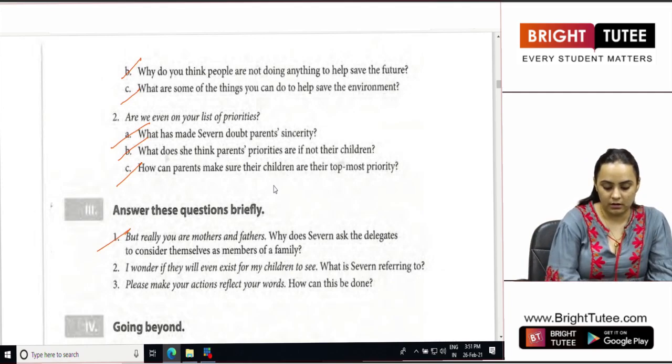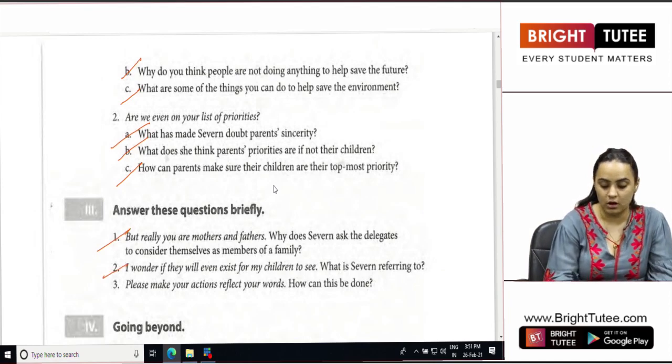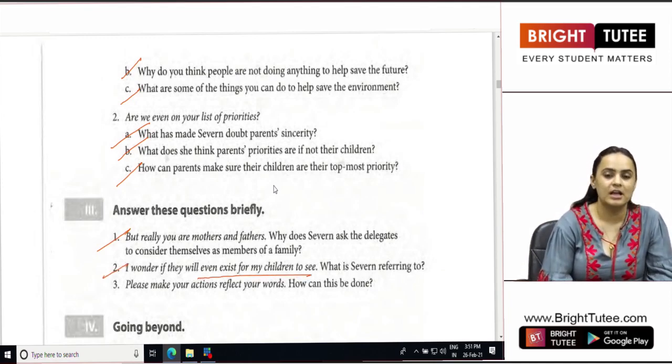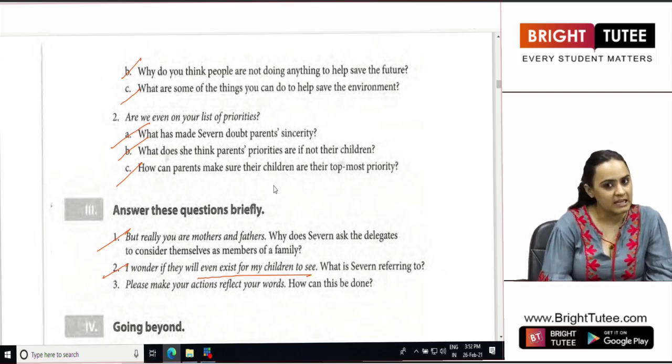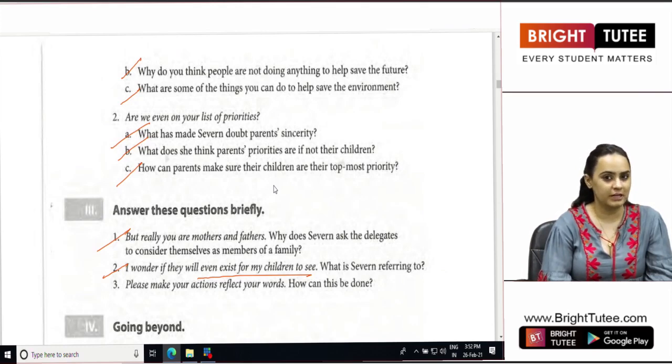If I wonder, they will even exist for my children to see. What is Severn referring to? She was referring to the herds of wild animals, the forest, the beautiful birds and butterflies who she could see right now. But she did not know whether her children would be able to enjoy this beauty of nature or not.